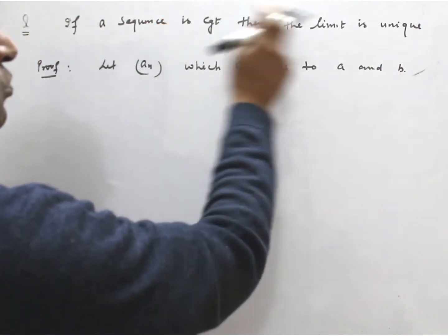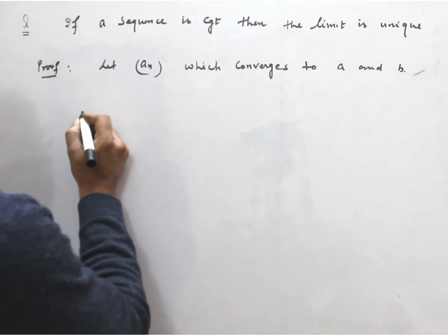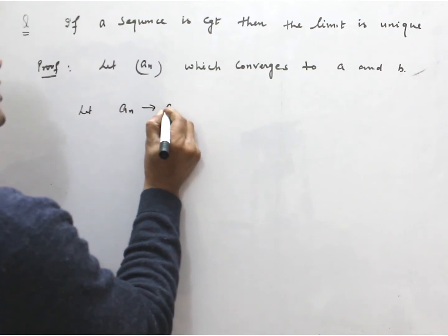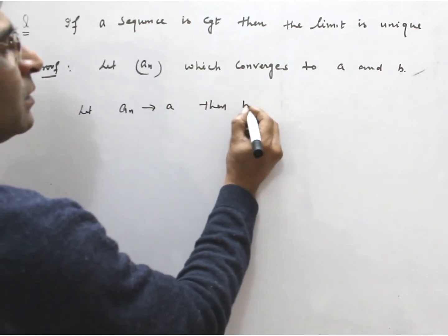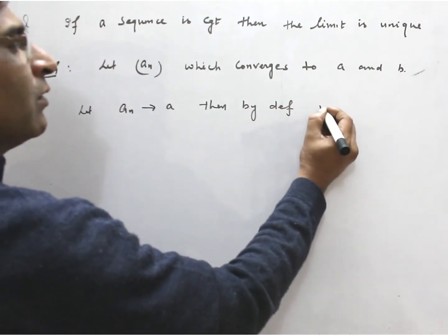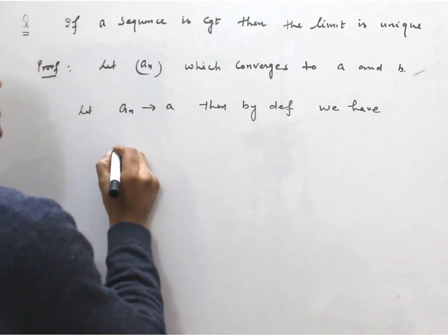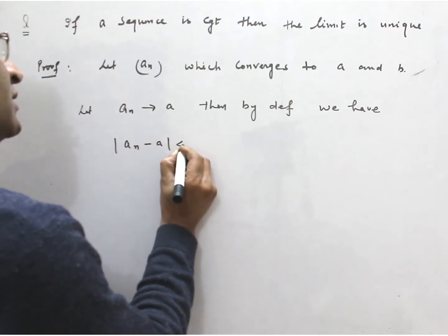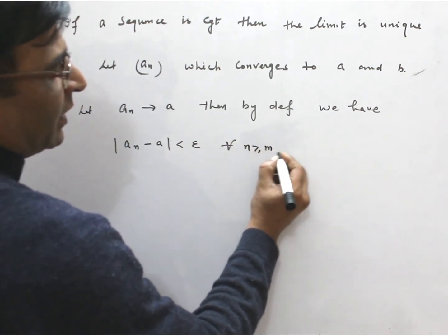We prove by contradiction. Let aₙ converge to a. Then by definition we have |aₙ - a| < ε/2 for all n greater than m₁.